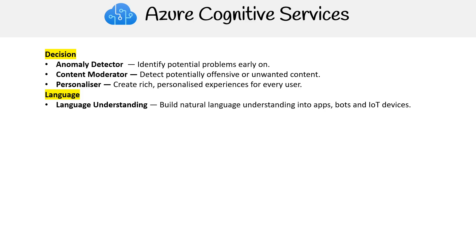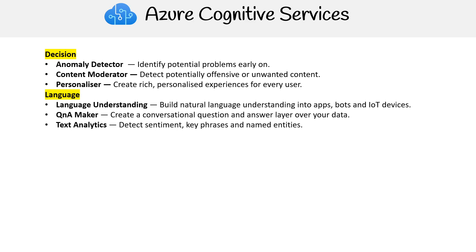For languages, we have Language Understanding, also known as LUIS. Build natural language understanding into apps, bots, and IoT devices. Q&A Maker — create a conversational question-and-answer layer over your data. Text Analytics — detect sentiment, so sentiment is like whether customers are happy, sad, or glad. Key phrases and named entities. Translator — detect and translate more than 90 supported languages.